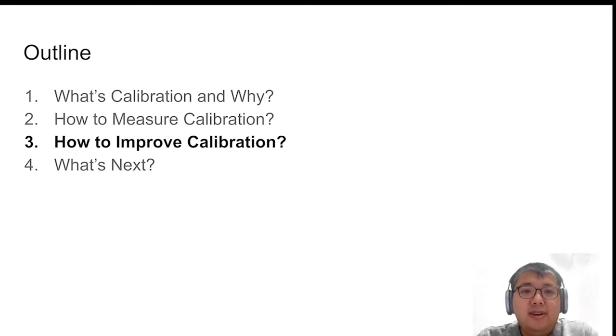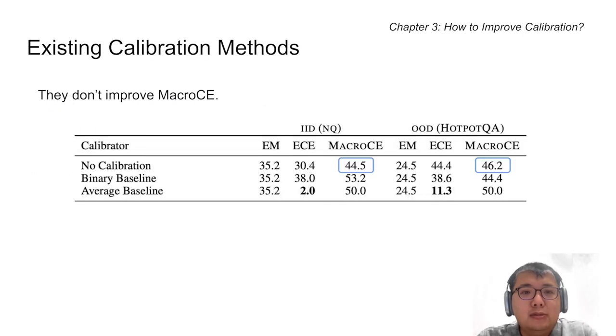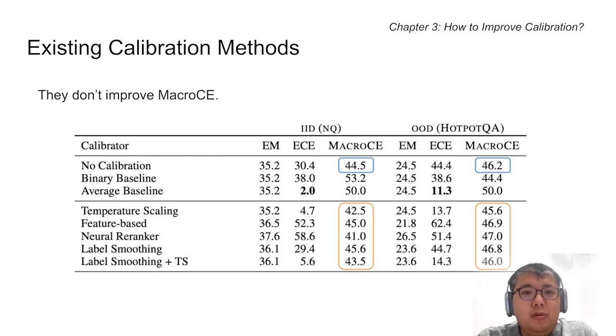Now that we have established a better metric, let's first see how existing calibration methods work under micro-CE. We see a clear trend that temperature scaling doesn't improve micro-CE both in domain and out-of-distribution. Moreover, a bunch of other calibration methods, such as training a feature-based classifier or neural re-ranker, don't improve micro-CE either.